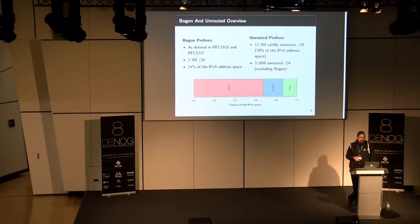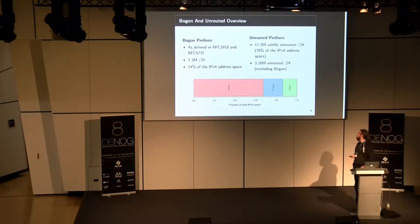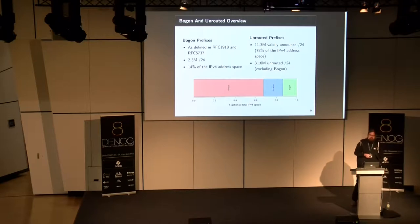We have 78% of the IPv4 address space being announced, which leads us to 3.16 million unrouted /24s. If you look at the plot, it's pretty clear we still have large amounts of IP space that is unrouted or Bogon.